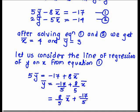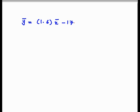So we get minus 17 by 5 plus 8 by 5 x bar. This can be written as 8 by 5 x bar plus minus 17 by 5, or 0.4 y bar plus 14 by 5. So we get y bar equals 1.6 x bar minus 17 by 5. This implies the value of b_yx is equal to 1.6.